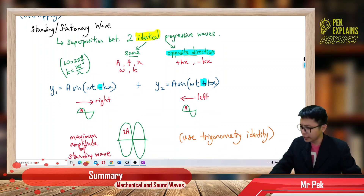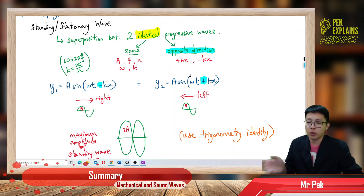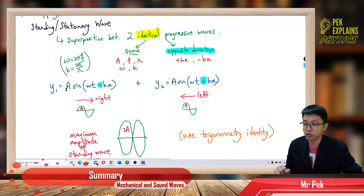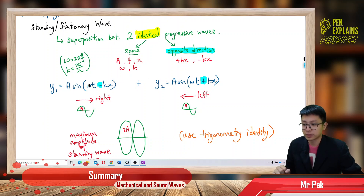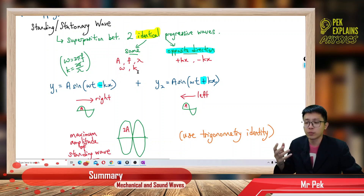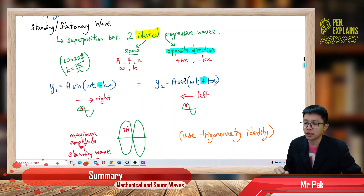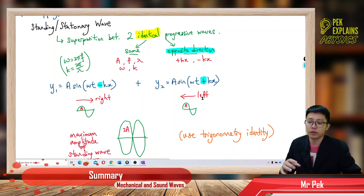So, stationary wave can be formed when there is an overlapping between two identical waves traveling in opposite direction — identical in terms of amplitude, frequency, wavelength, everything. The only difference is the direction: one is positive kx, another one is negative kx. Negative kx means moving to the right; positive kx means the wave is moving to the left. Maybe it's very hard to imagine what's happening here, so that's why I want to show you a simulation.